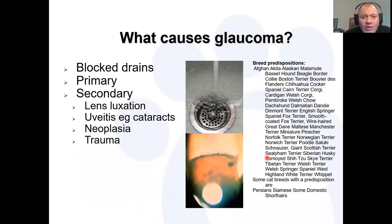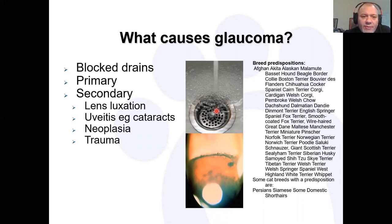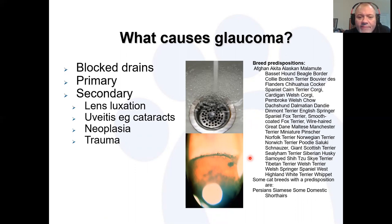Glaucoma is always a disease of the drain — it is always an outflow disease. Going back to our bath analogy, there is no form of glaucoma caused by overproduction of aqueous humor; it's all about blocked drains. This can be a primary abnormality of the drainage system, which we see in angle closure glaucoma. It's inherited in many breeds — a list of those recognized in the UK — and this is the commonest reason for glaucoma in the UK and across the world.